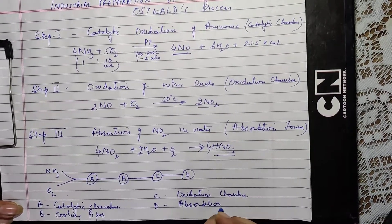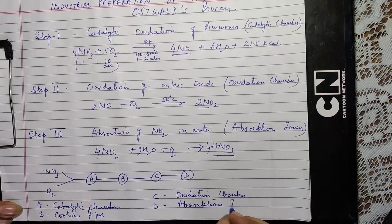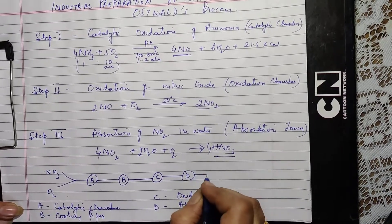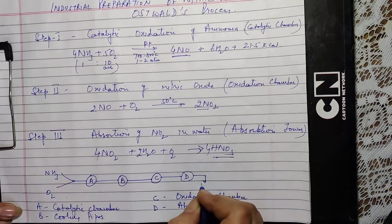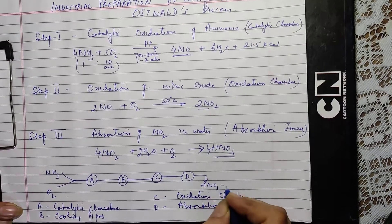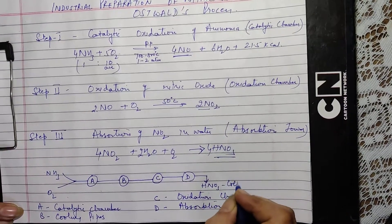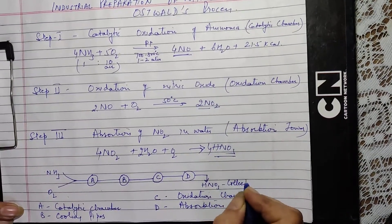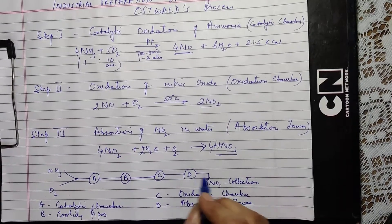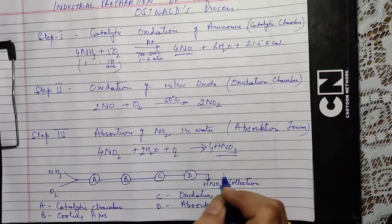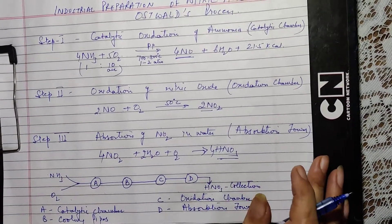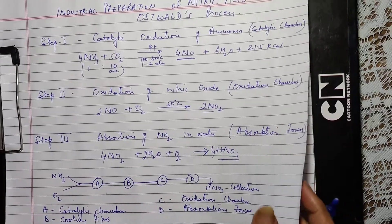After the absorption tower, HNO3 — nitric acid — is collected. In some books the flowchart may be extended to chamber E, which is the collection tower.